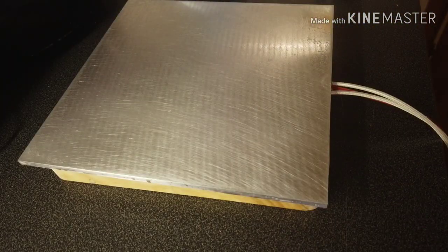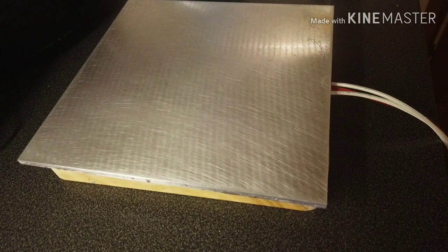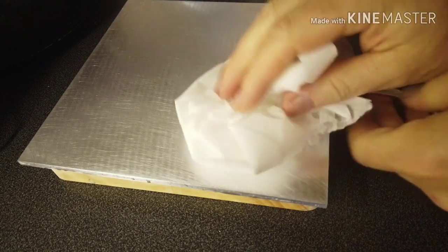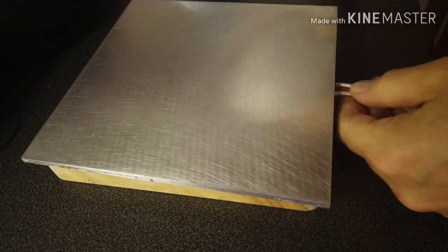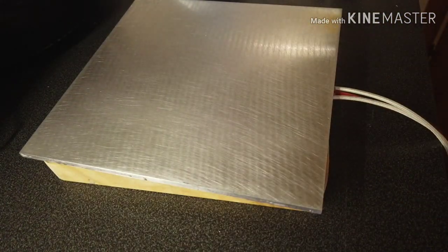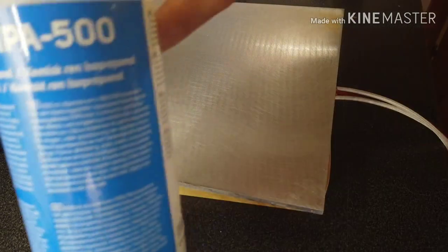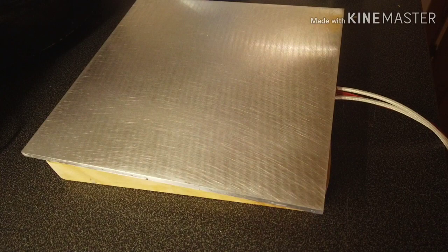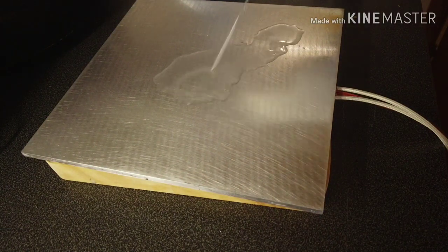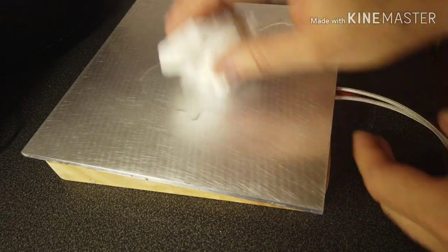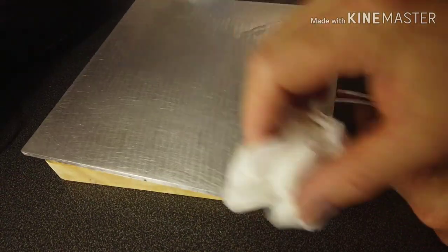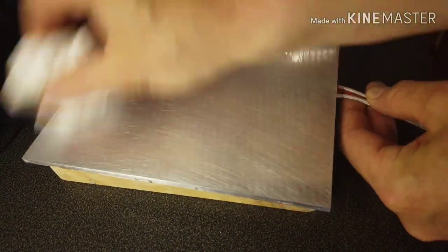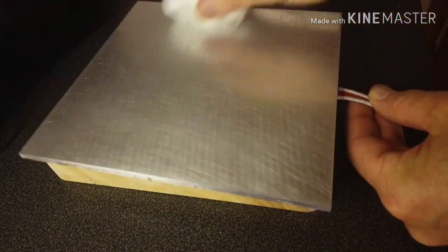120 grit so I can get better adhesion for the paint. Of course I'm going to clean this with alcohol now. Just going to use some alcohol and make sure there are no grease stains on the surface, then we can add the paint.